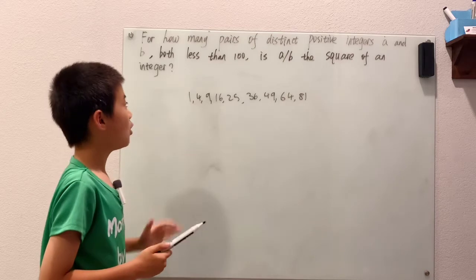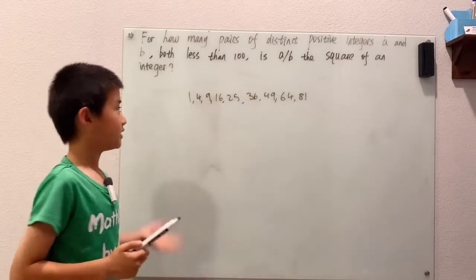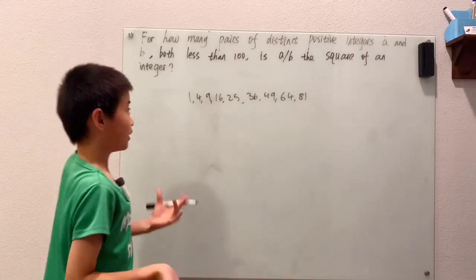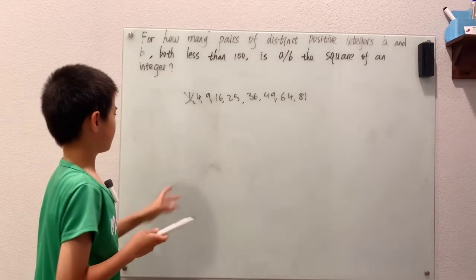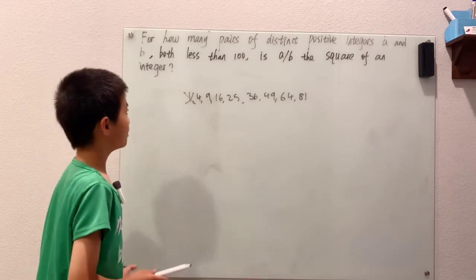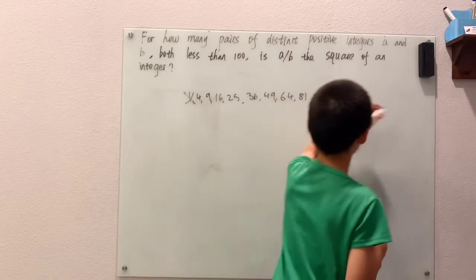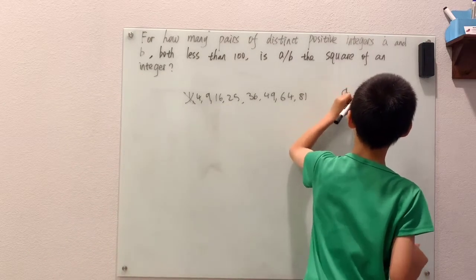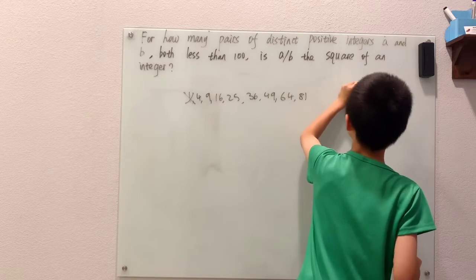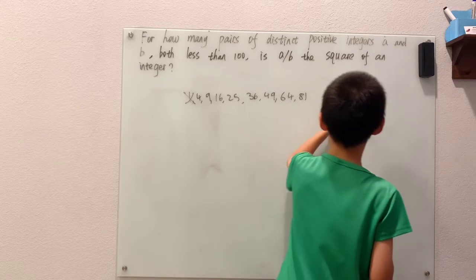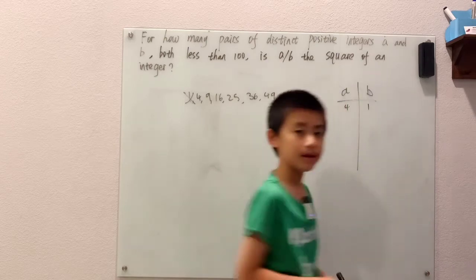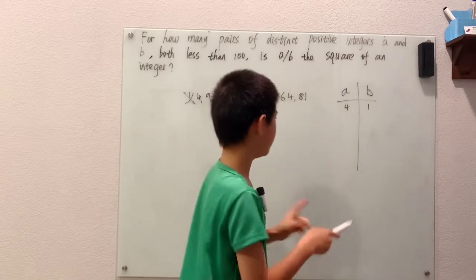Well, first of all I'll start with 1. Well then that means A over B and B are equal, and they are distinct positive integers, so 1 is out of our thoughts. Well, for 4, to keep track of that I'll make a little chart for what A is and what B is. First of all, A can just obviously be 4 and B be 1, since 4 over 1 is 4.